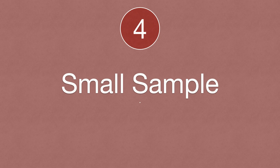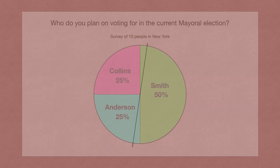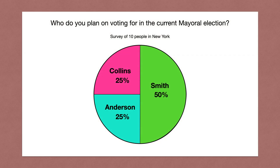Another way data can be manipulated is with a small sample — sometimes a sample is just too small to make any significant conclusion. Here's a pie chart with the headline 'Who do you plan on voting for in the current mayoral election?' The chart shows 50% voting for Smith, 25% for Collins, and 25% for Anderson. Based on this, you'd say Smith is the clear favorite at 50%.